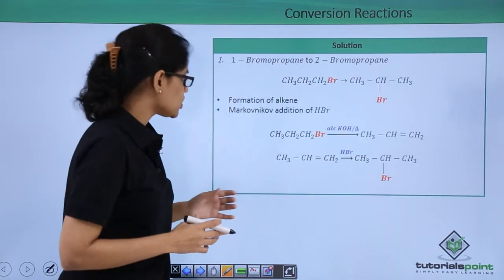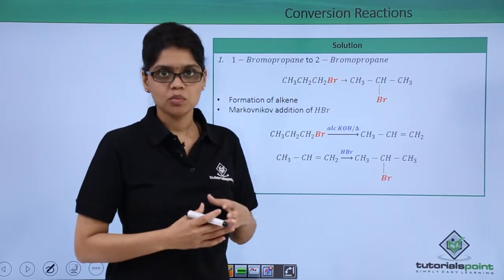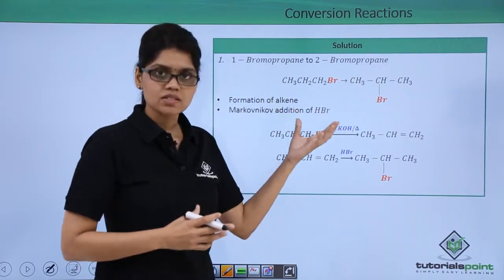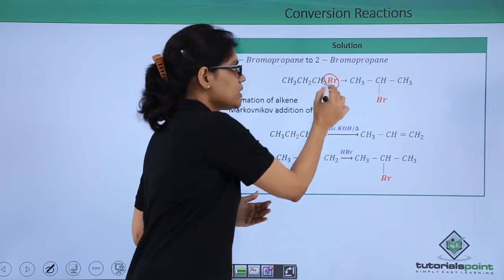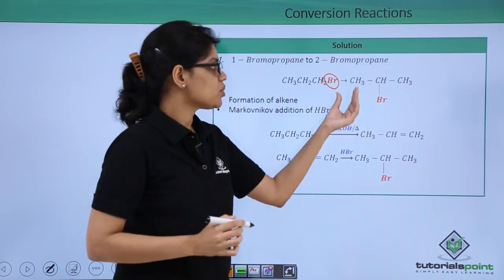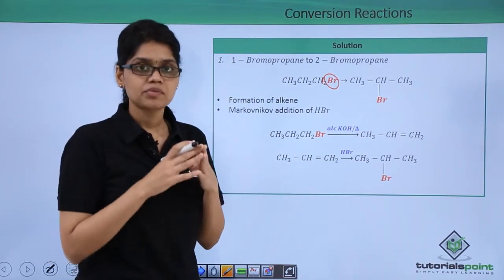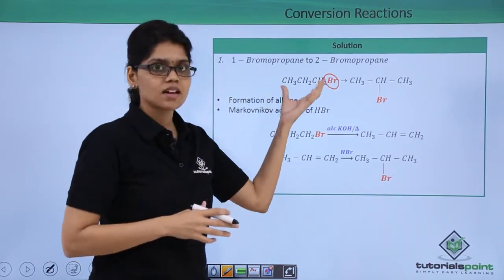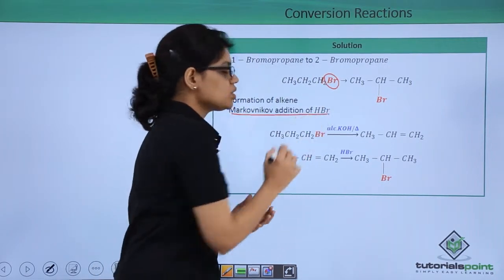In the first reaction we are trying to convert 1-bromopropane to 2-bromopropane. If you look at the structure here you can see that in the reactant you have bromine at C1 carbon atom. This conversion can be achieved by first converting this alkyl halide to an alkene followed by Markovnikov addition of HBr.